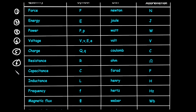Next is capacitance. Capacitance is represented by symbol capital C, and it is measured in farad. Farad can be abbreviated as capital F.